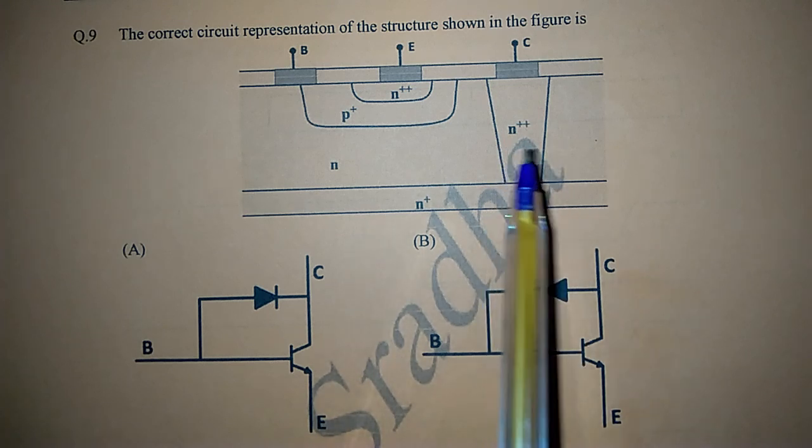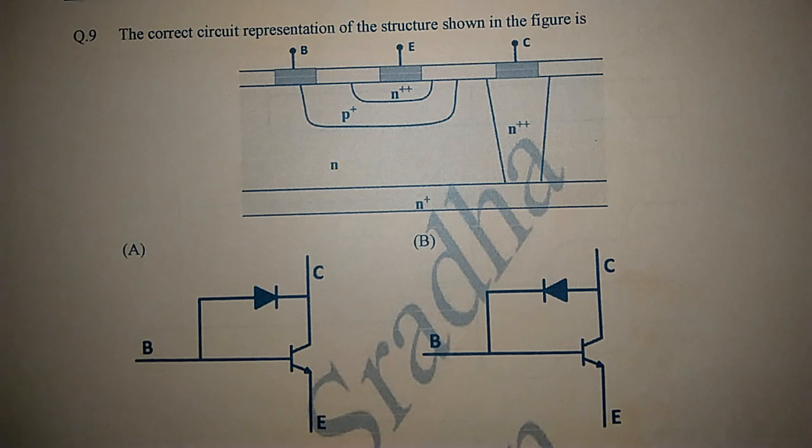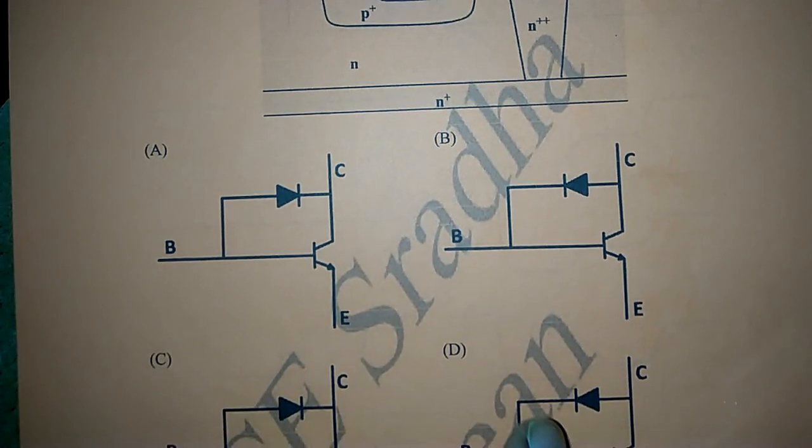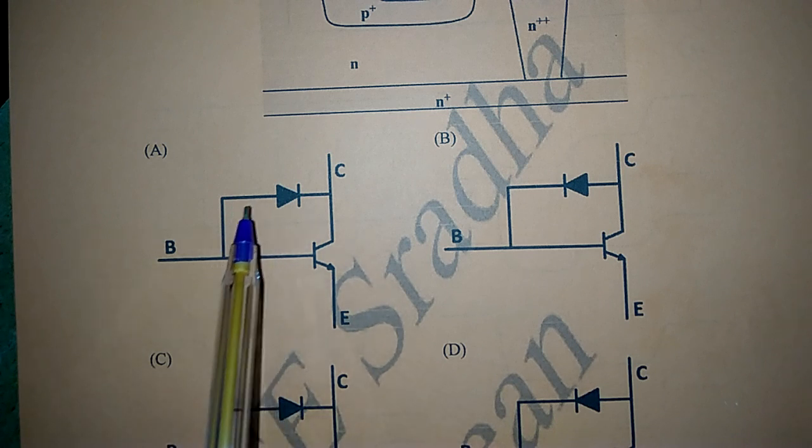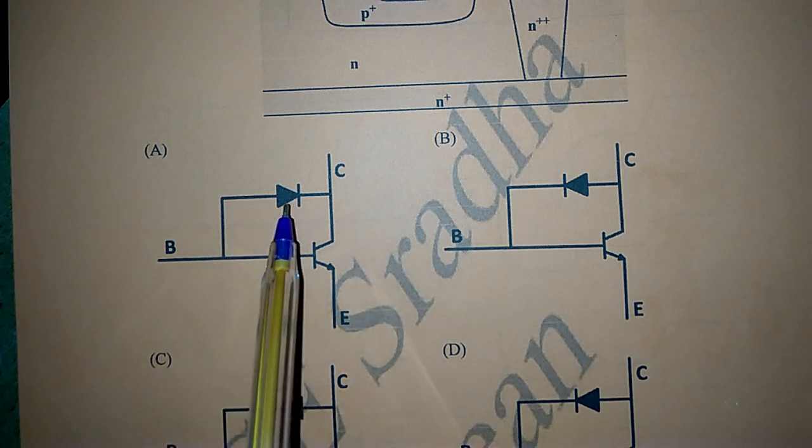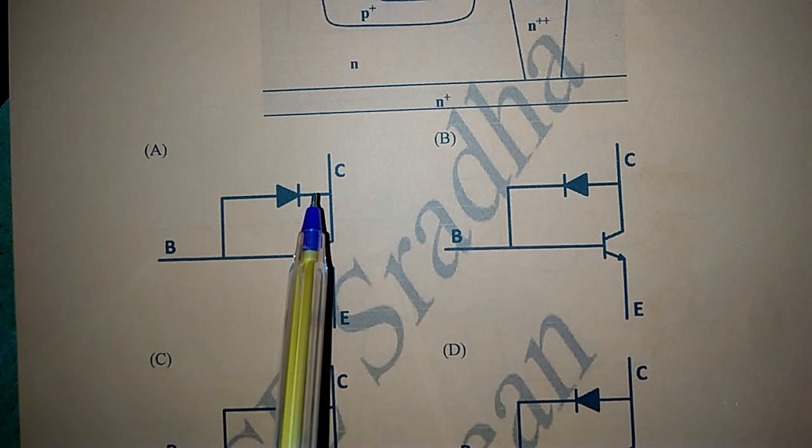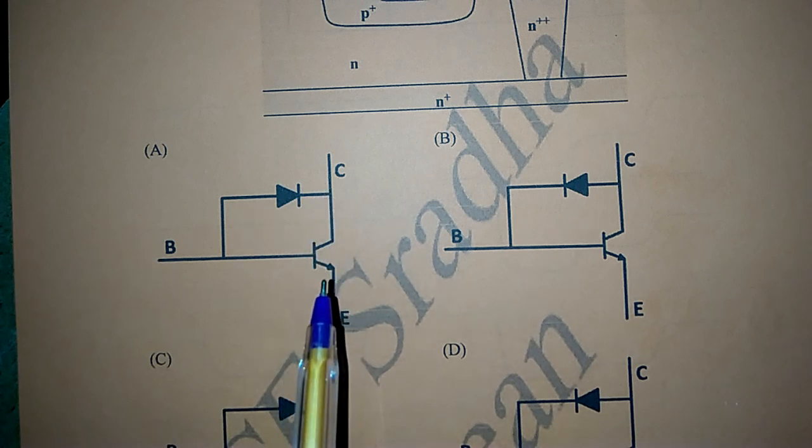If we observe option A, a PN diode is connected such that P-type material is connected to base and N-type material is connected to the collector of ordinary BJT.